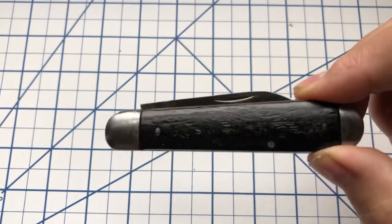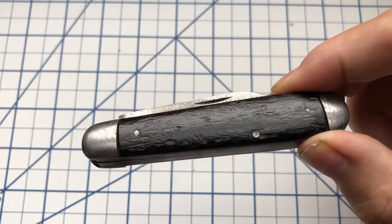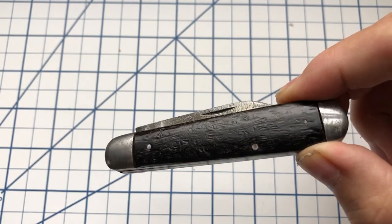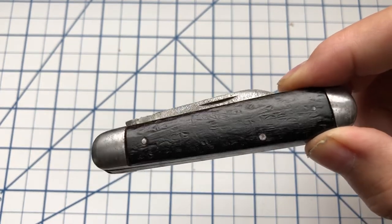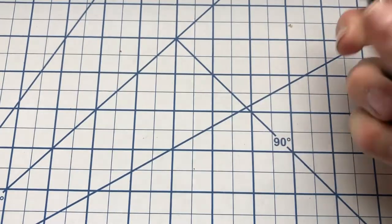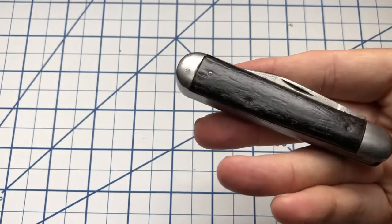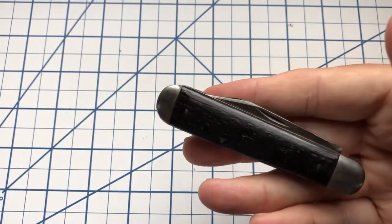But it still does have, you can see it's been pocket worn quite a bit, but it still does have that same jigging on it. So this would be apparently, from what I've seen online, the original version of the Winterbottom pattern that Queen used quite a bit.